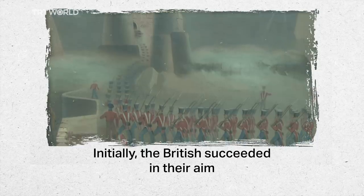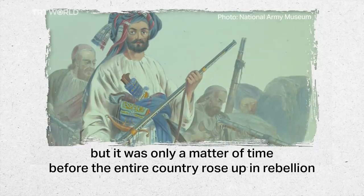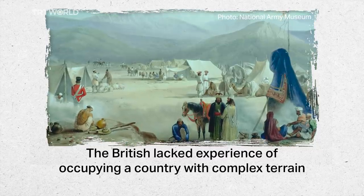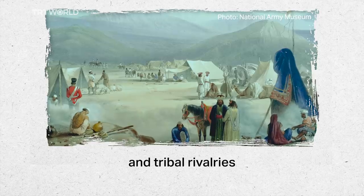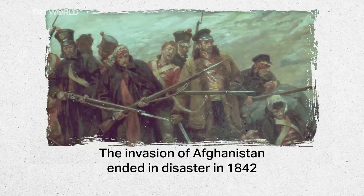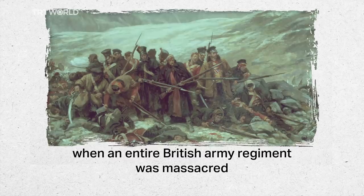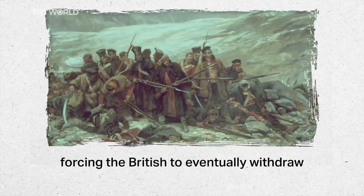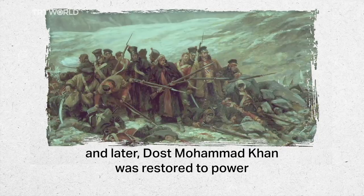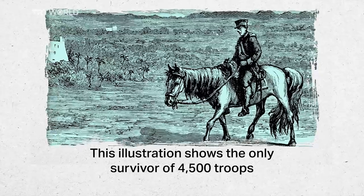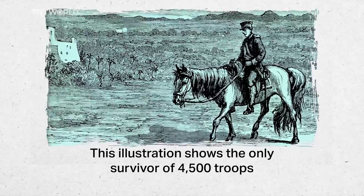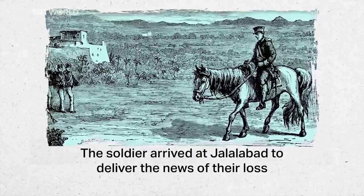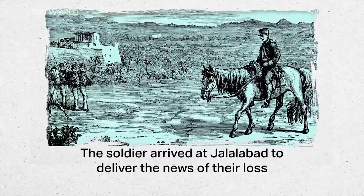Initially the British succeeded in their aim, but it was only a matter of time before the entire country rose up in rebellion. The British lacked experience of occupying a country with complex terrain and tribal rivalries. The invasion of Afghanistan ended in disaster in 1842, when an entire British army regiment was massacred, forcing the British to eventually withdraw, and later Durst Mohammed Khan was restored to power. This illustration shows the only survivor of 4,500 troops and 12,000 camp followers who were massacred in Kabul. The soldier arrived at Jalalabad to deliver the news of their loss.